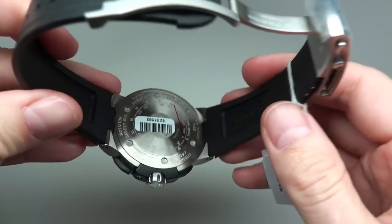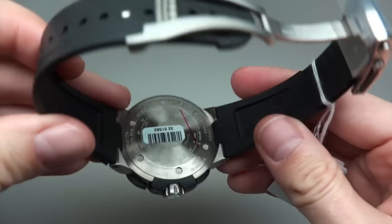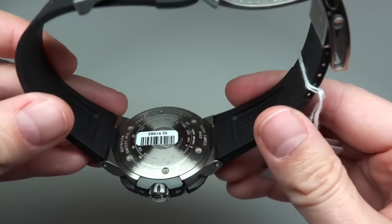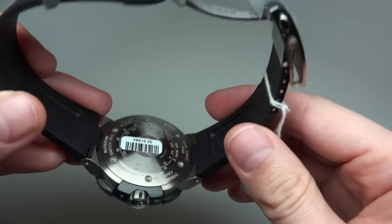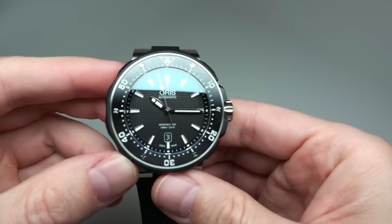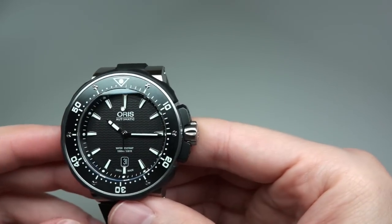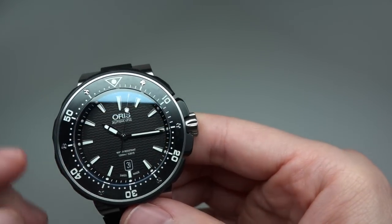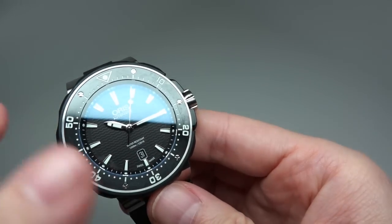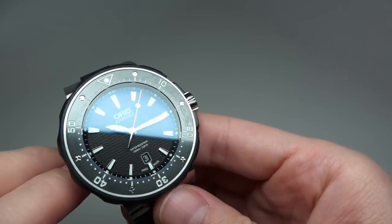Usually Oris watches have a skeleton right here, but in this case it's a solid back. Sapphire crystal. It's a black dial with very pretty looking waves in the dial.